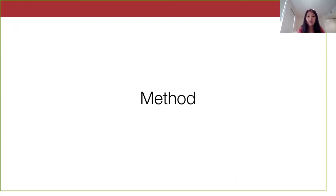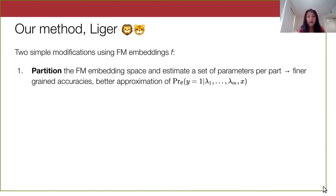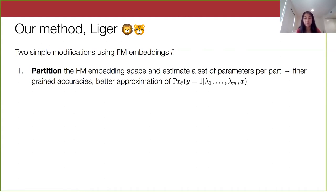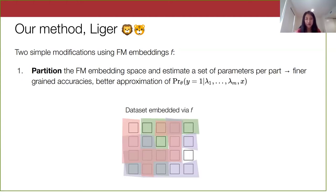Now let's talk about how foundation models can improve on these two points via our method LIGER. The first modification to the weak supervision approach is to partition the input data in the embedding space and estimate a different set of parameters over each part. This gives us finer-grained accuracy parameters — if we partition into three subsets, we now have three times M parameters to describe our model. This also brings us closer to approximating an output probability that actually accounts for the input data X.